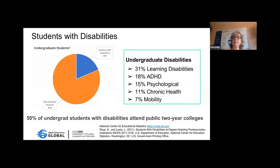One key area is disabilities. These statistics are for undergraduate students in general, though 50% of undergraduate students with disabilities attend community colleges — more than at any public or private four-year institution. The categories from the National Center for Education Statistics include learning disabilities, ADHD, psychological, chronic health, and mobility.